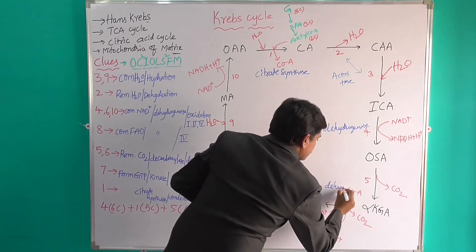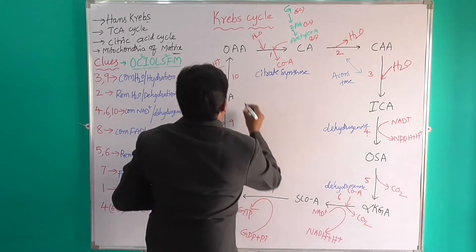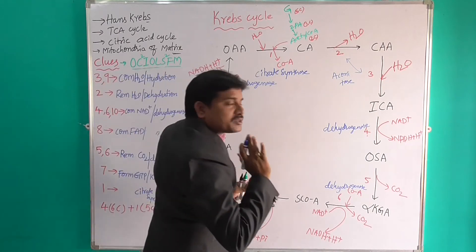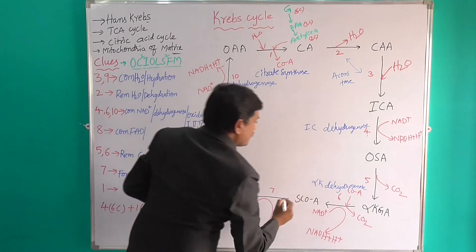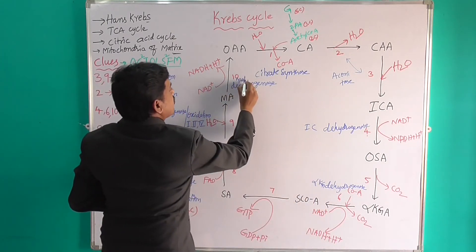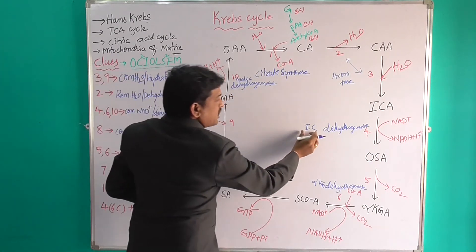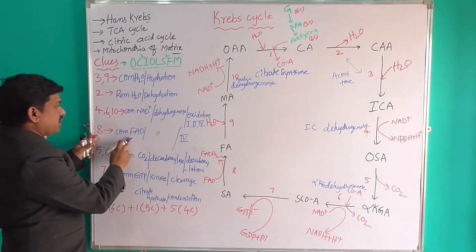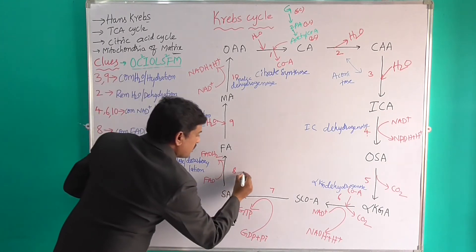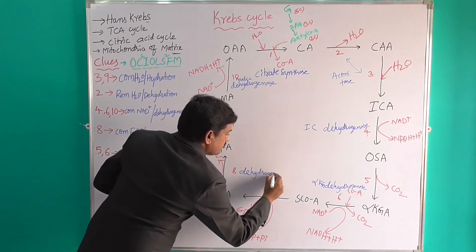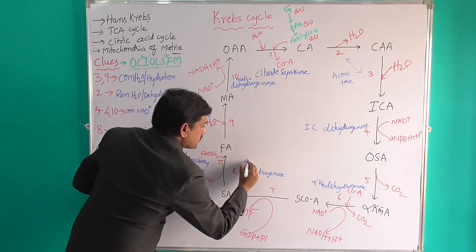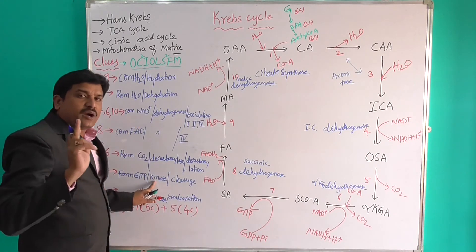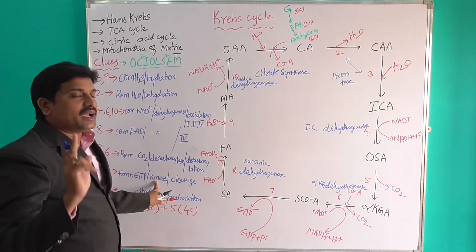The specific dehydrogenase enzymes are: Isocitric Dehydrogenase (stage 4), Alpha-Ketoglutaric Dehydrogenase (stage 6), Succinic Dehydrogenase (stage 8, combined with FAD), and Malic Dehydrogenase (stage 10). For stage 7, where GTP is formed, the enzyme is Succinyl Thiokinase — because wherever ATP or GTP is formed, kinase enzymes are involved.